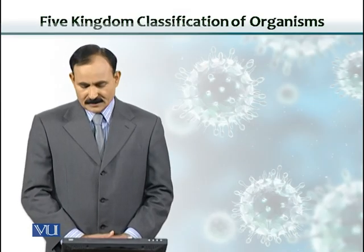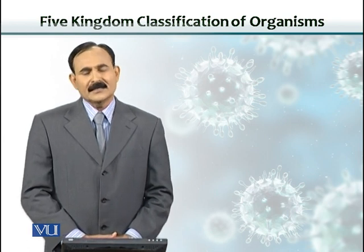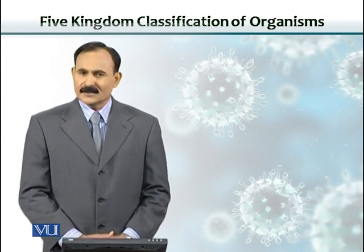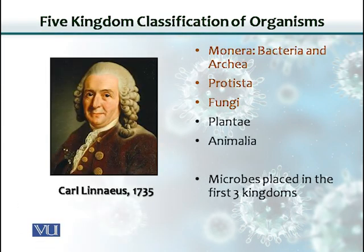Carl Linnaeus in 1735 came up with a plan and placed all organisms including microbes into five kingdoms. Those kingdoms include Monera, which had bacteria and archaea in them, Protista, Fungi, Plantae, and Animalia. Microbes were placed in the first three kingdoms: Monera, Protista, and Fungi.